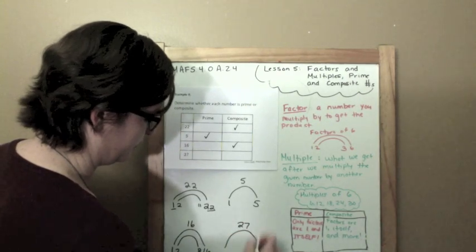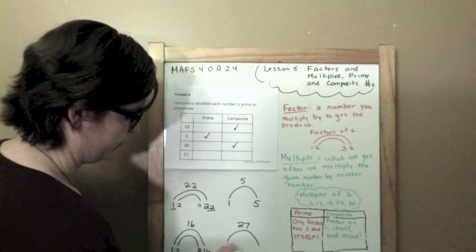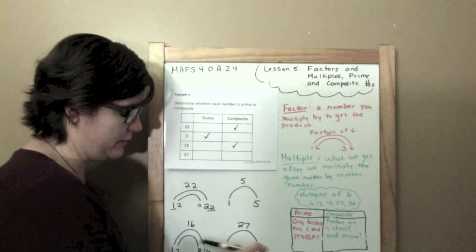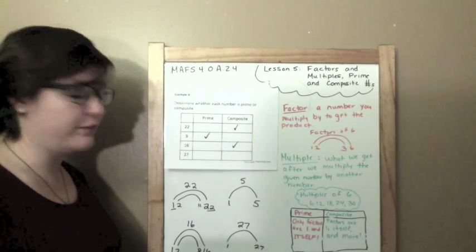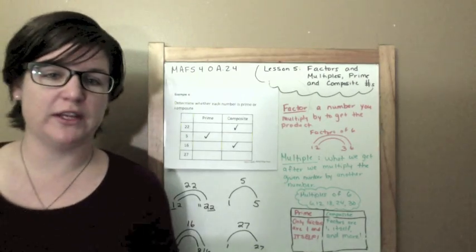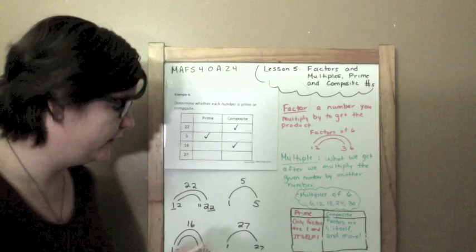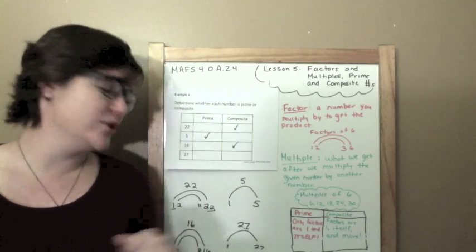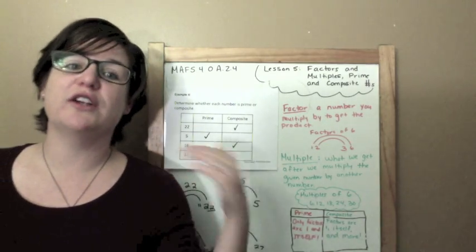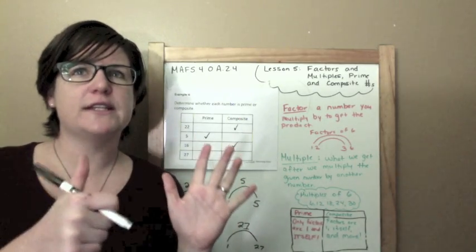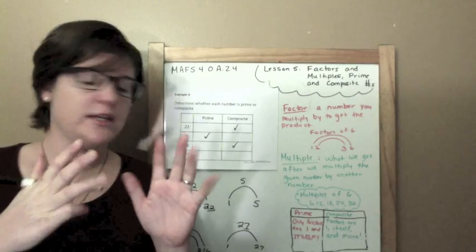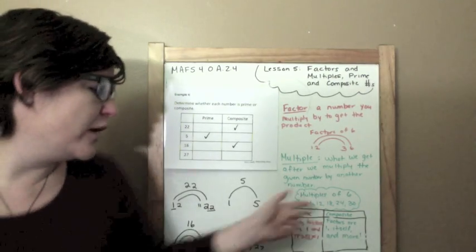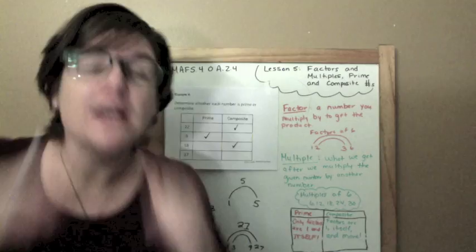All right, 27. 1 and itself. Make it come up here a little bit so you can see it. 1 and itself. Let's count by 2's to see if we can get it. 2's aren't going to work and here's a trick why. This 7 right here is not an even number. If that were an even number, we could multiply by 2's. A factor would be 2, but it's not. So, let's move on just to 3's. 3, 6, 9, 12, 15, 18, 21, 24, 27. Yes, 3 times 9 equals 27. We found 1 and itself and we found more. So, it's composite.